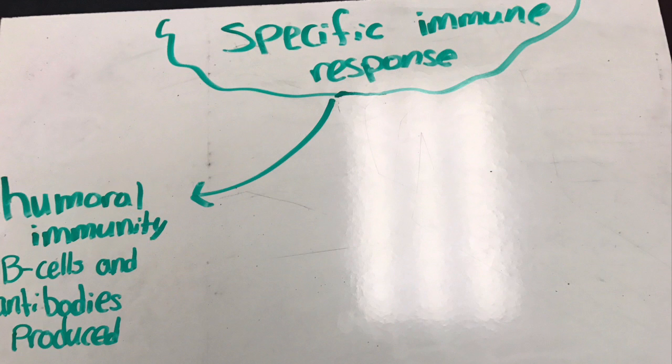Humoral immunity is the aspect of immunity mediated by macromolecules found in extracellular fluids such as secreted antibodies, complement proteins, and certain antimicrobial peptides. Humoral immunity is so named because it involves substances found in the humors, or body fluids, and is the one that uses B-cells. Humoral immunity consists of the B-cells and the antibodies they produce.